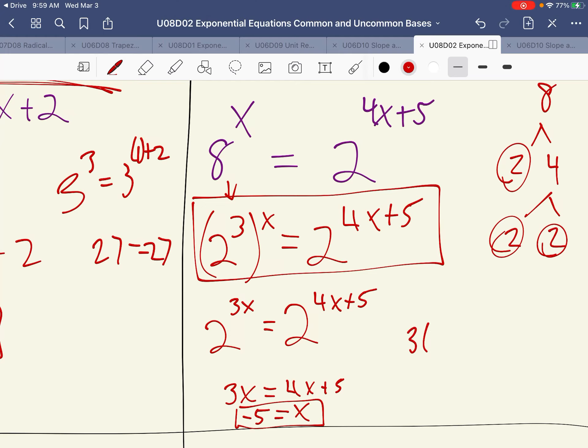So 2 to the power of 3 times negative 5 should be equal to 2 to the power of 4 times negative 5 plus 5. So we should get negative 15 equals negative 15.